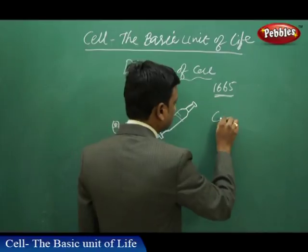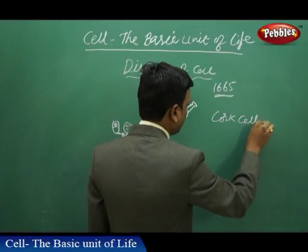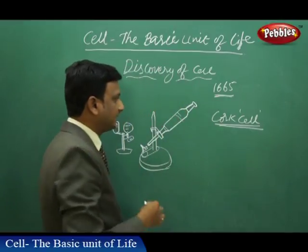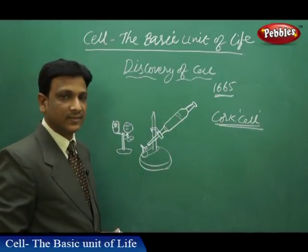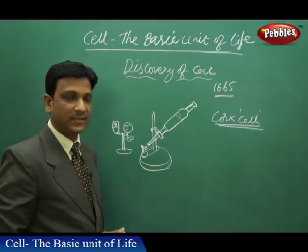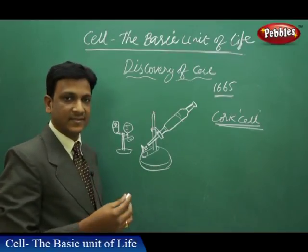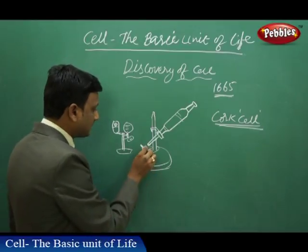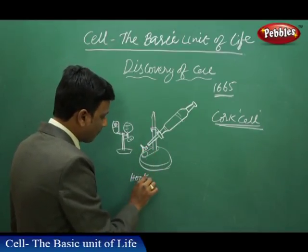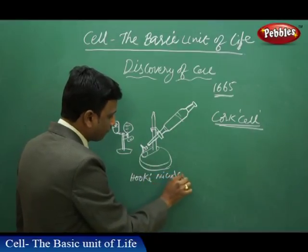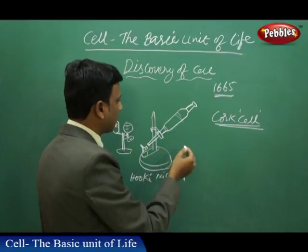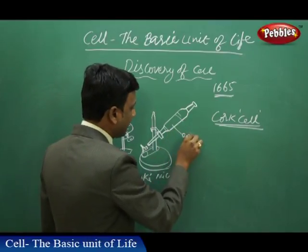The term 'cell' was not there before his discovery. He took a small specimen of the cork and observed it. He later named the cavities he saw as 'cells.' This is Hooke's microscope, which he used to observe the cork cells.